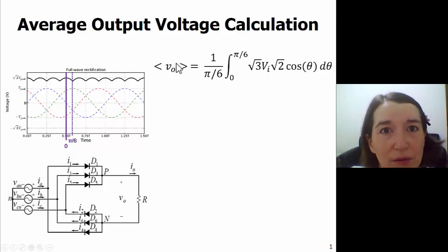So here's our average voltage and we're going to do it in radians because it's easier. We do one over the total period of π over 6, and then we integrate from zero to π over 6, and we do the function here. Because this is a line-to-line voltage, we're going to have to multiply by another square root of three here, then the RMS voltage, and then the square root of two. So this is our setup and then we have our cosine.